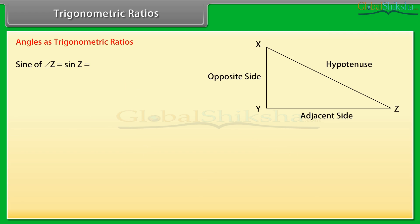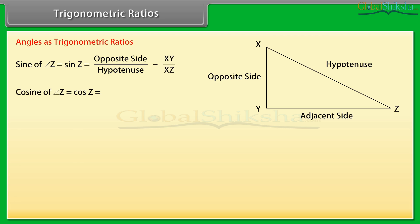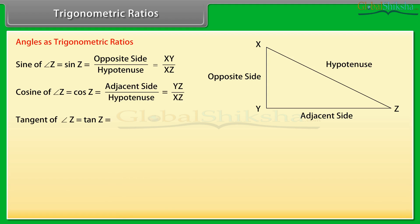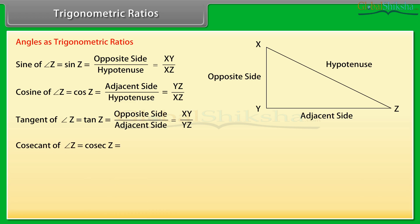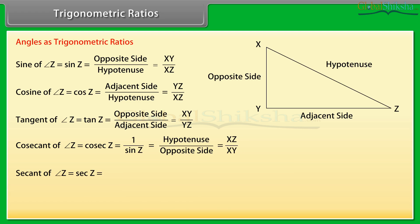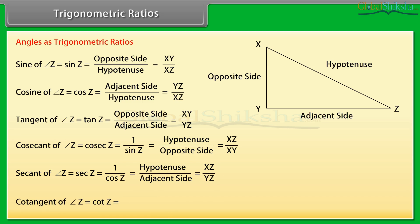Let us now express different measures of angle Z as ratios of the sides of triangle XYZ. Sine of angle Z equals opposite side upon hypotenuse. Cosine of angle Z equals adjacent side upon hypotenuse. Tangent of angle Z equals opposite side upon adjacent side. Cosecant of angle Z equals 1 upon sin Z, which equals hypotenuse upon opposite side. Secant of angle Z equals 1 upon cos Z, which equals hypotenuse upon adjacent side. Cotangent of angle Z equals 1 upon tan Z, which equals adjacent side upon opposite side.